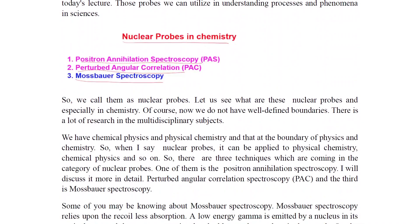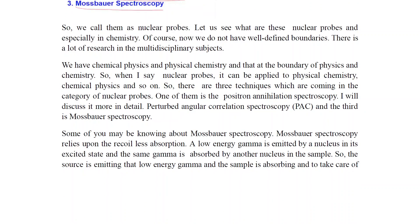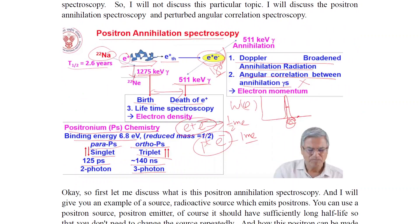There are certain nuclear probes in chemistry: Positron Annihilation Spectroscopy, Perturbed Angular Correlations, and Mössbauer Spectroscopy. For positron annihilation spectroscopy, there is Doppler-broadened annihilation radiation and angular correlation between annihilation gammas and electron momentum. The positronium chemistry: binding energy is 6.8 eV, the reduced mass is half. Para-Ps gives singlet, ortho-Ps is triplet; the triplet lifetime is 140 nanoseconds and it is a three-photon process.